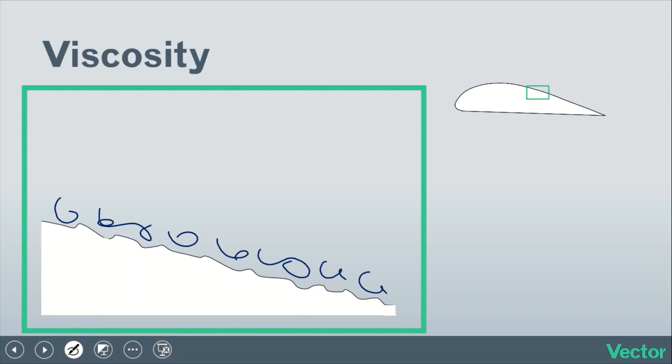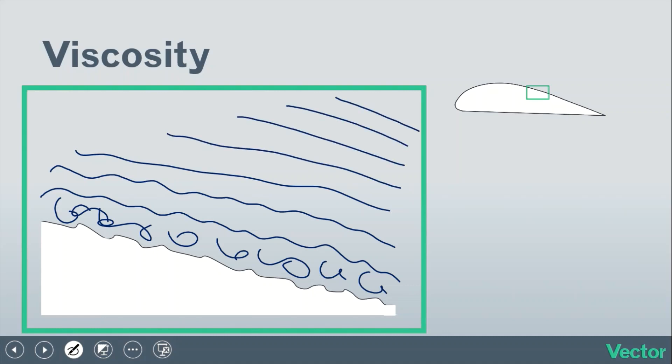Because of the viscosity of the air and friction between layers, this area of stagnation drags down the layer flowing above it. Each successive layer gets dragged down and slowed down a bit, until we have smooth laminar flow. This area of stagnation that gradually increases to smooth laminar flow is called the boundary layer.